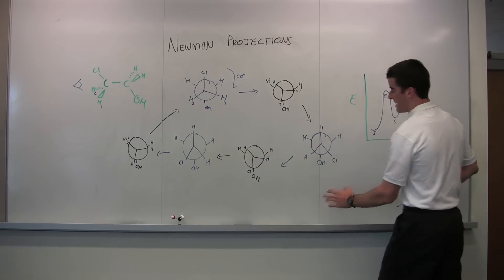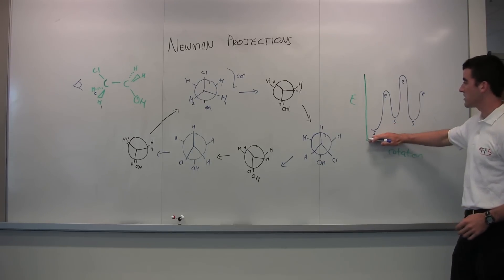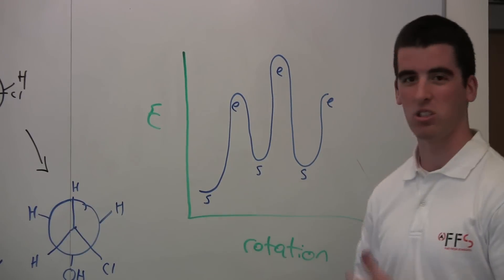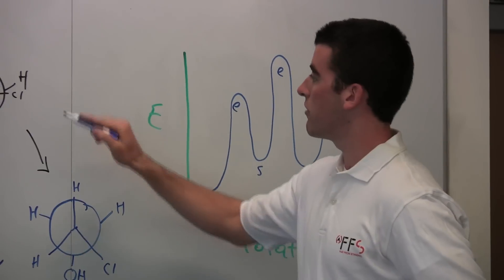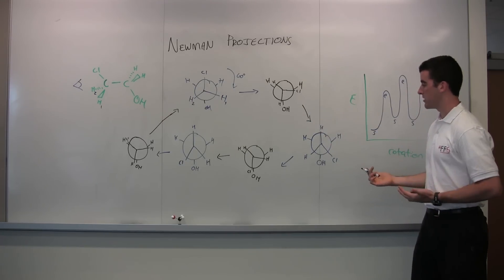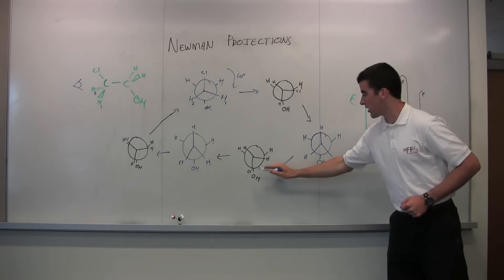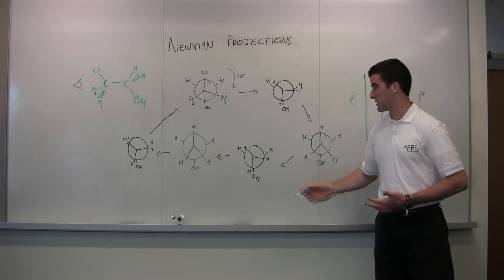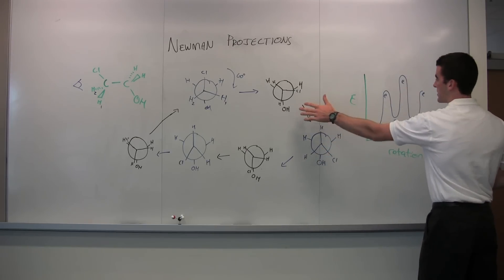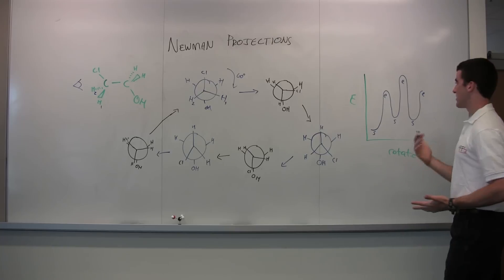In our first staggered conformer we have anti, and in our second and third staggered conformers we have gauche. Looking at the energy diagram: the first staggered (anti) has the least energy and is the most stable. The two gauche conformers are at the same energy — there's no way to distinguish which is more stable. For the eclipsed conformers, the most unstable is when the Cl and OH are directly on top of each other, indicated by the highest energy peak. The last eclipsed conformer is similar in energy to the other non-worst eclipsed, but still unstable because the groups are still peeking over each other.